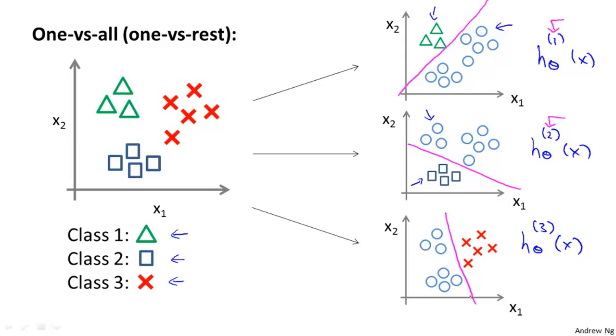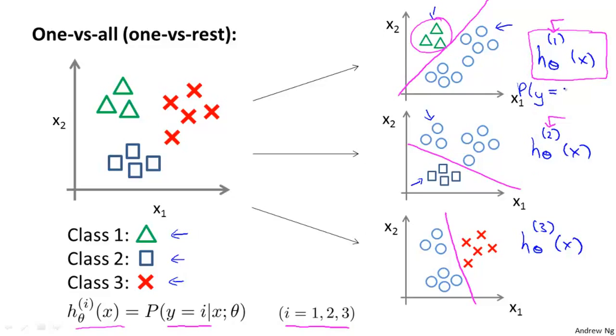So to summarize, what we've done is, we fit three classifiers, so for i equals 1, 2, 3, we fit a classifier h superscript i subscript theta of x, that's trying to estimate what is the probability that y is equal to class i given x and parameterized by theta. So in the first instance, for this first one up here, this classifier was learning to recognize the triangle. So it's thinking of the triangles as a positive class. So h superscript 1 is essentially trying to estimate what is the probability that y is equal to 1, given x and parameterized by theta.